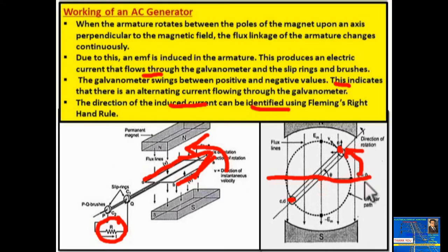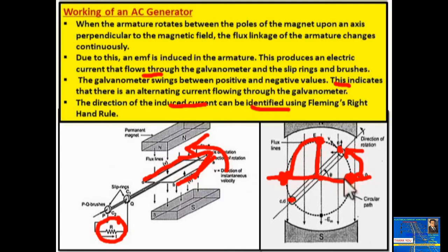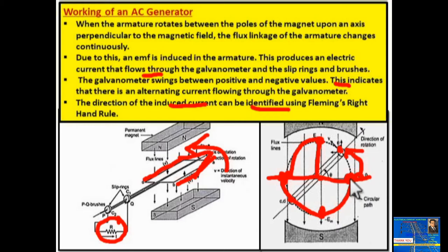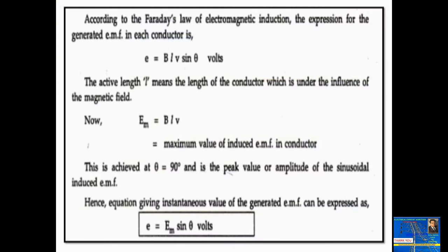The coil moves from zero degrees and reaches different angles. At 90 degrees, the induced EMF is maximum. At zero degrees, the induced EMF is zero. At 180 degrees, induced EMF is again zero. Then the direction of EMF reverses. At 270 degrees, you again get maximum EMF. At 360 degrees, one full cycle is completed and the EMF is again zero.